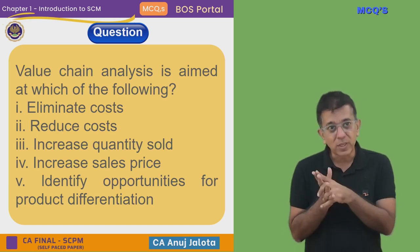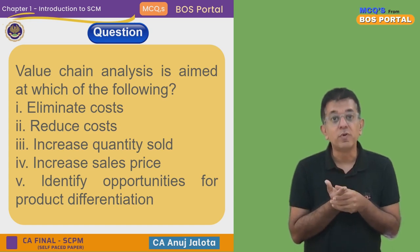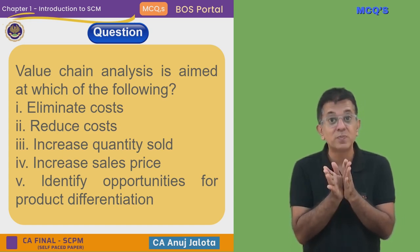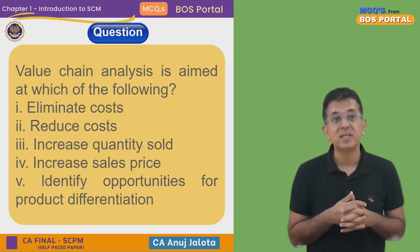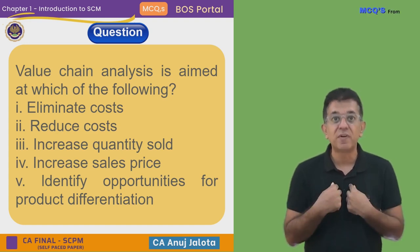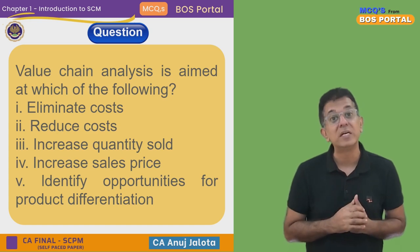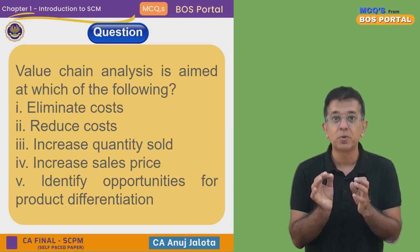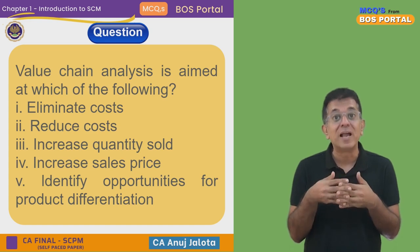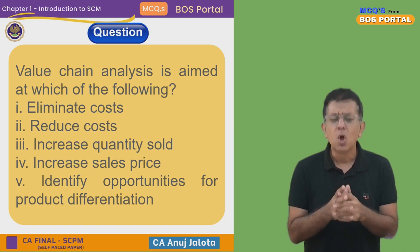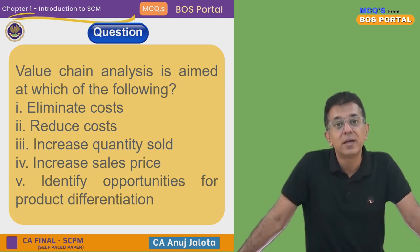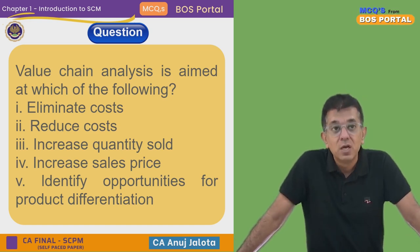By doing that, you will eliminate the cost — because you won't do activities that don't add value. You will also reduce the cost, because you'll spend less time on non-value-added activities. And obviously, point five — identify the opportunities for product differentiation — applies too, because product differentiation comes from how you perform your activities. If you perform value-added activities more effectively than competitors, your value in the market will increase and consumers will prefer your products.